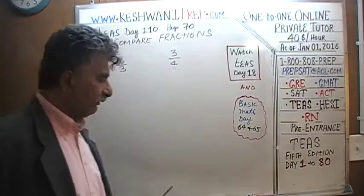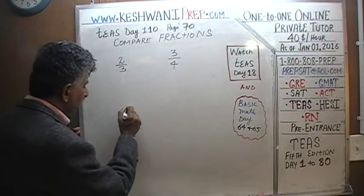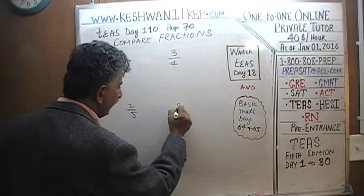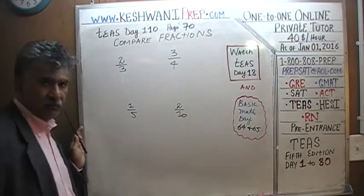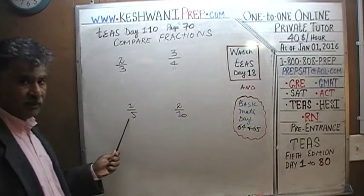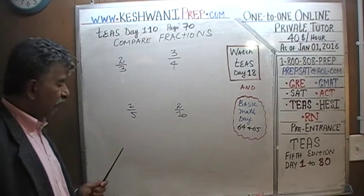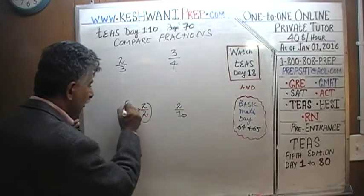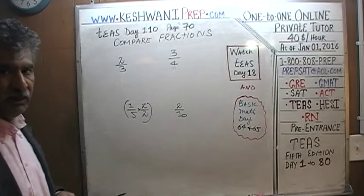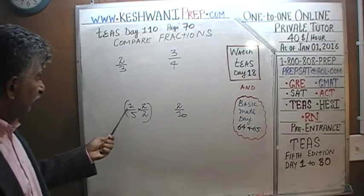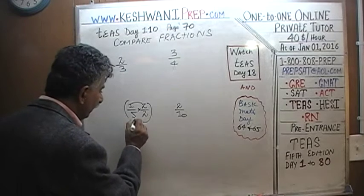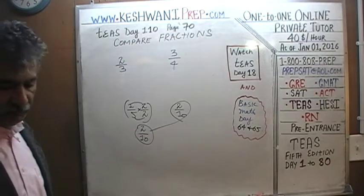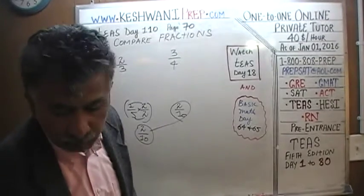For example, if somebody asked which one is bigger — one-fifth or two-tenths — if we can make both have a denominator of ten, we can compare them. We multiply the top and bottom of one-fifth by two over two. Since two over two equals one, we're not changing its value. One times two is two, and five times two is ten — so one-fifth equals two-tenths.